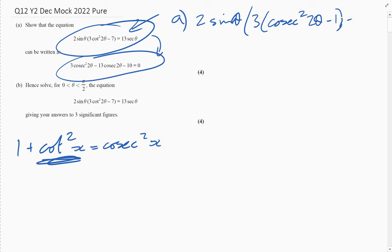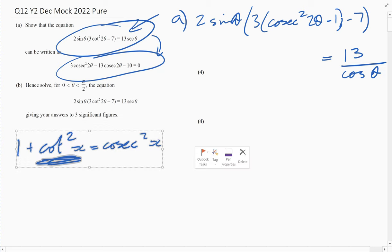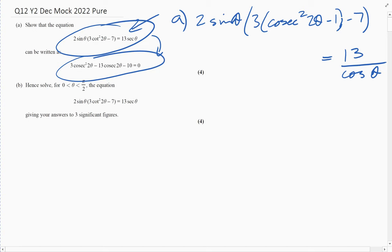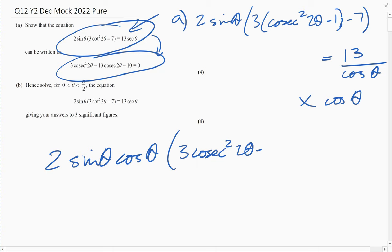Now sec theta is 1 over cos, so we can put that there. I'm running out of space, so let's move down here. If we multiply everything by cos theta, we get 2 sine theta cos theta, and then multiply that bracket: 3 cosec squared 2 theta minus 3 minus 7 is minus 10, and we've just got 13 on the right hand side.